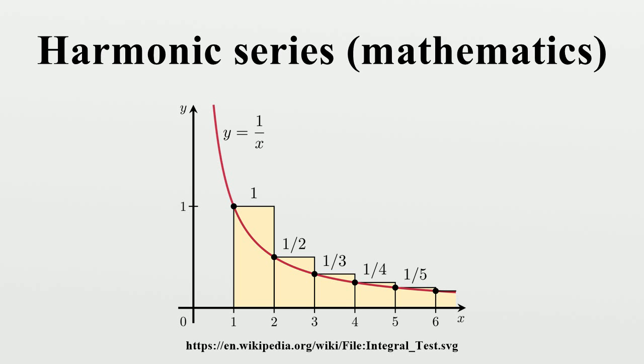This formula is a special case of the Mercator series, the Taylor series for the natural logarithm. A proof without words that the sum is ln(2) was shown by Matt Huddleston. A related series can be derived from the Taylor series for the arc tangent. This is known as the Leibniz series.